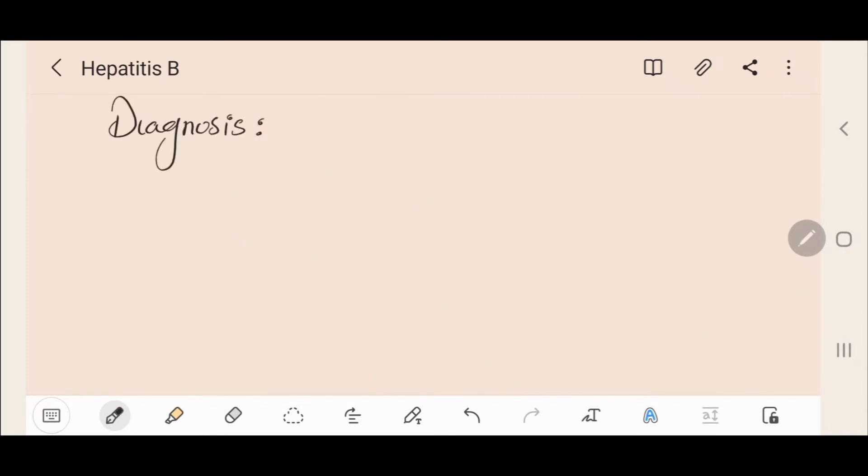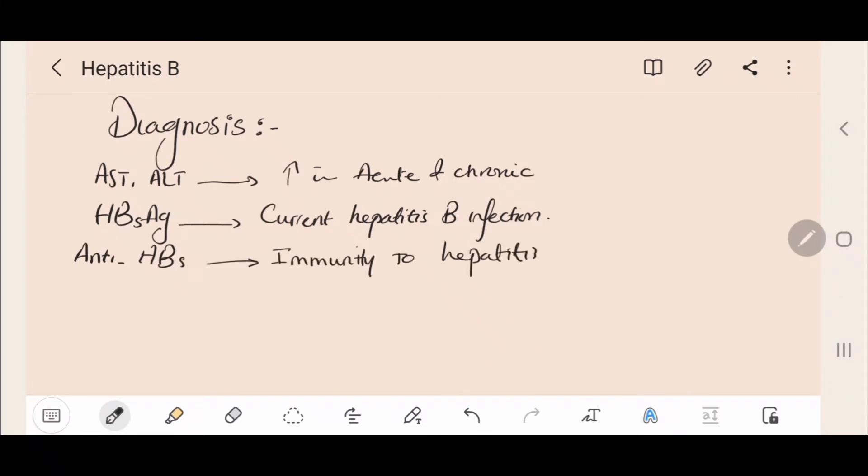In acute and chronic Hepatitis B, we would find AST and ALT to be elevated. Hepatitis B surface antigen (HBsAg) would be present in current Hepatitis B infection. The Hepatitis B surface antibody (anti-HBs) means that this person has immunity to Hepatitis B infection.